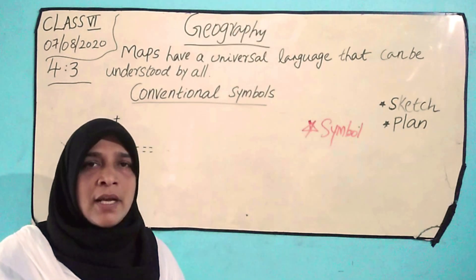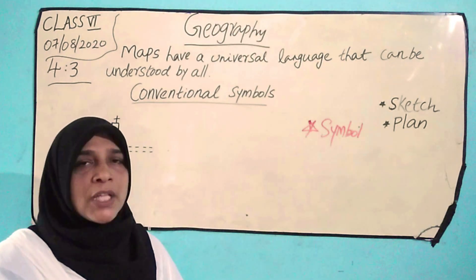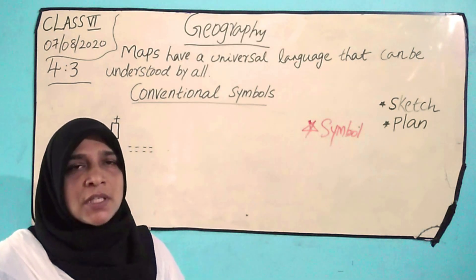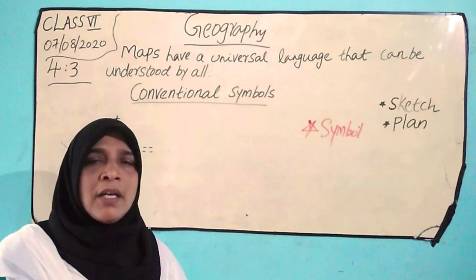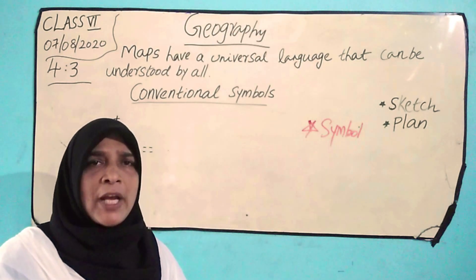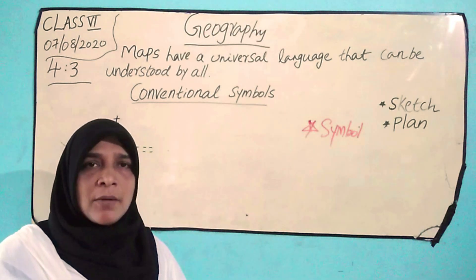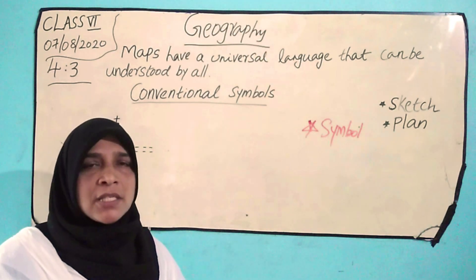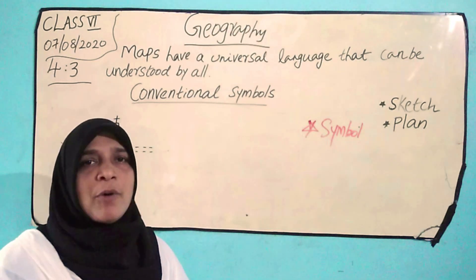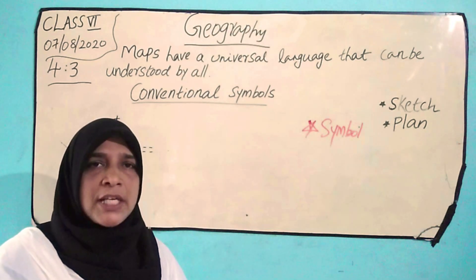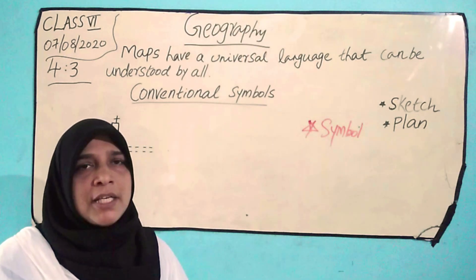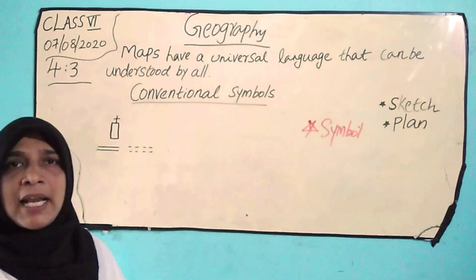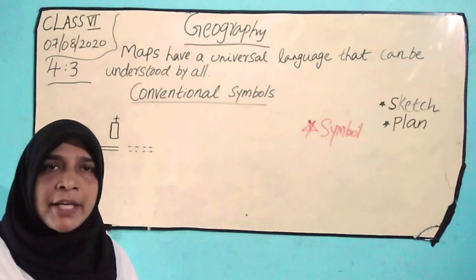We use lines, colors, etc. With the use of these symbols, maps are drawn very easily. Suppose even if you don't know the area, you take a map and collect information from the maps and reach that particular area. It is very useful to all. A map has a universal language that can be understood by all.